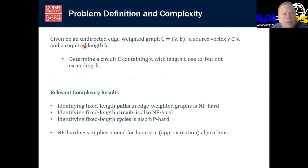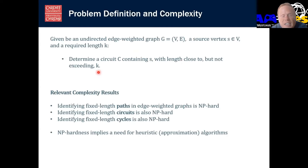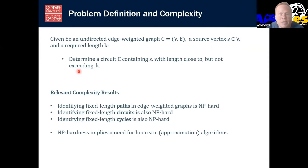So what's the problem definition? We're given an undirected edge-weighted graph, a source vertex S which is where we're going to start and end, and we have a required length K. We want to determine a circuit containing the start point with a length close to, but not exceeding K. I've stuck to this definition of not exceeding K. In reality, if we wanted a five kilometre run, we might be happy with five kilometres and 10 metres, or we might be happy with just under. This is a simplification, but we could change that to allow us to exceed that target as well.